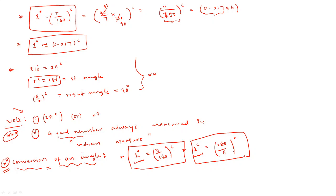Hello students. Let us continue from the trigonometry of the last class. We stopped at conversion of an angle. One degree equals pi by 180 radians, and one radian equals 180 degrees by pi. We use these two formulas to convert angles in degrees to radians and radians to degrees.